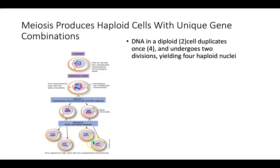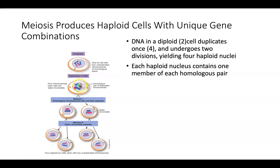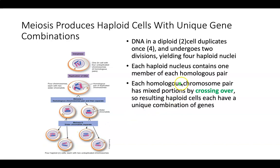Each haploid cell contains one member of the homologous pair — one pink and one blue. These homologous pairs are special because they undergo something called crossing over, which creates a haploid cell with a very unique combination of genes. You can see that one chromosome is mostly pink but has a little blue at the end, and another is mostly blue but has a little pink at the end — that's because crossing over occurred.